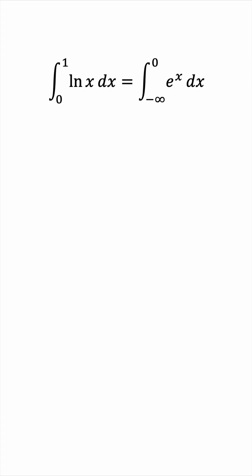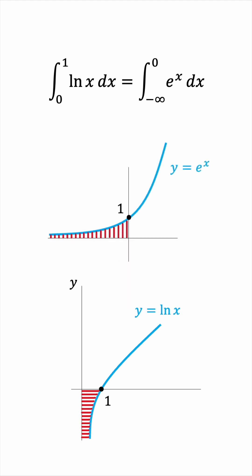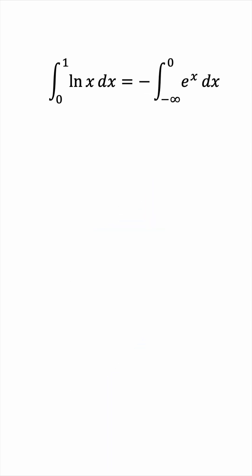But be careful. The area under the natural log is negative because it's below the x-axis, whereas the area under the exponential function is positive. So we need to account for this sign change by inserting a negative sign next to the integral.